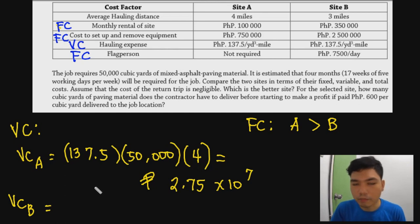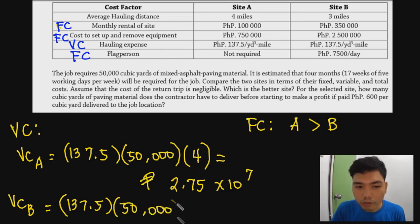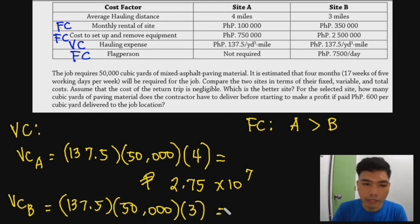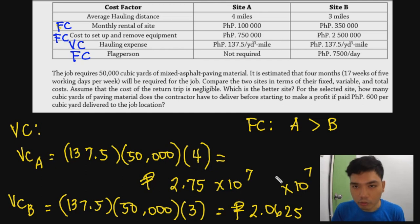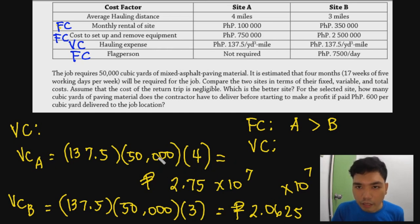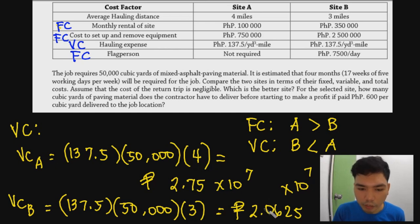For Site B's variable cost: same rate of 137.5, same 50,000 cubic yards, but only 3 miles distance. This gives 20,625,000 pesos. On the basis of variable cost, Site B is the better option since it's cheaper than Site A.